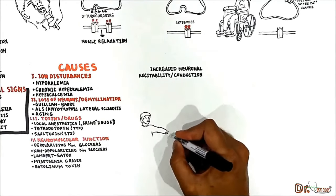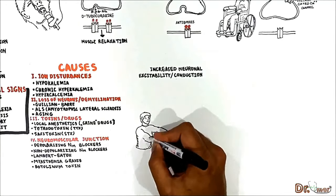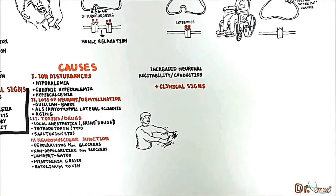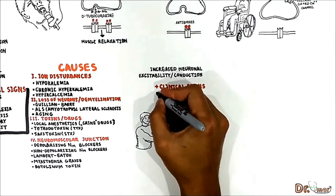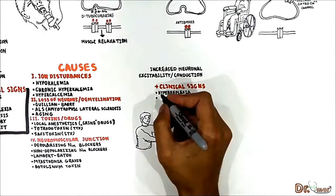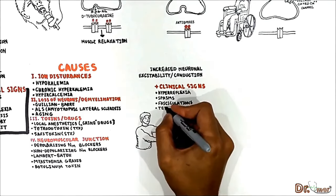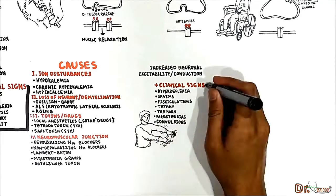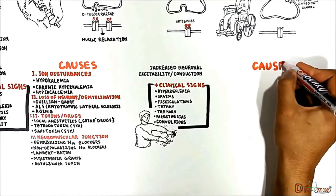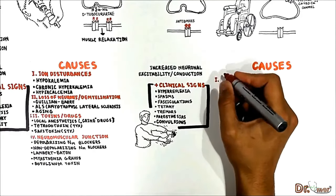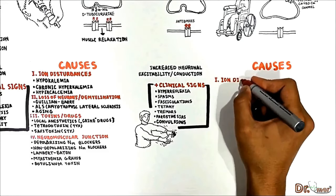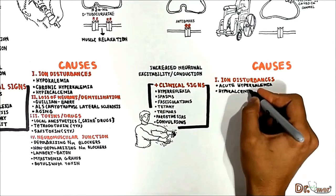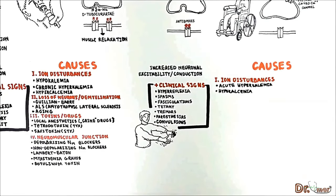Next, let's talk about increased neuronal excitability and conduction. Clinical signs could include hyperreflexia, spasms, muscle fasciculations, tetany, tremors, paresthesias, and convulsions. The causes of increased neuronal excitability and conduction include ion disturbances in cases of acute hyperkalemia and hypocalcemia — the mechanisms of which have already been explained.